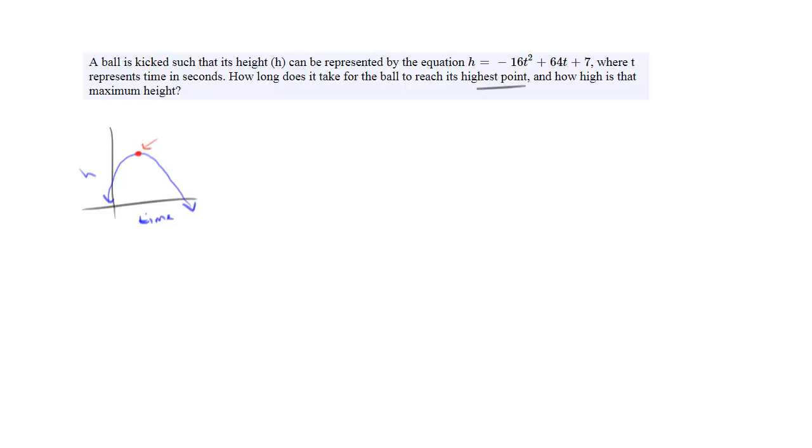Okay, so since we have a quadratic in standard form, we're going to use the quadratic formula for vertex to solve this. In this case, the vertex occurs at negative b over 2a, and in this example, b is 64. So we have negative 64 over 2 times negative 16. This ends up being negative 64 over negative 32, which is 2.